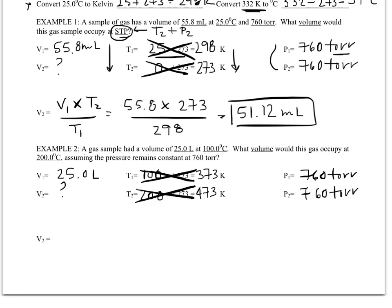So P1 and P2 are 760 torr. I'm solving for V2 again. So I'm going to use the same equation as I did above. So 25 times my T2, 473, divided by my T1, 373. So 25 times 473, divided by 373, gives me 31.70. And my units are liters.